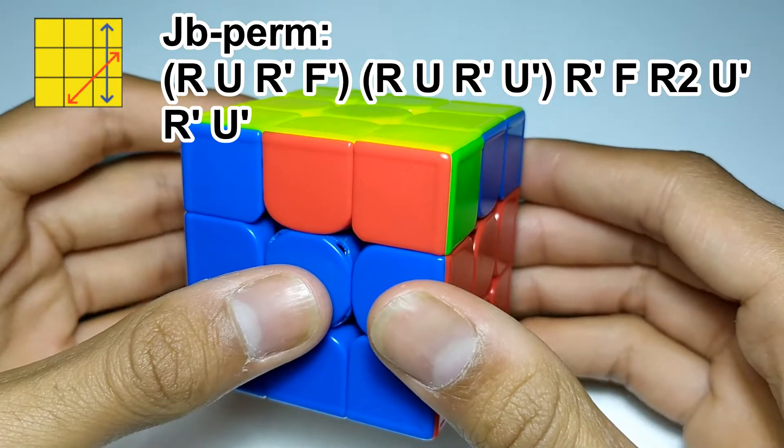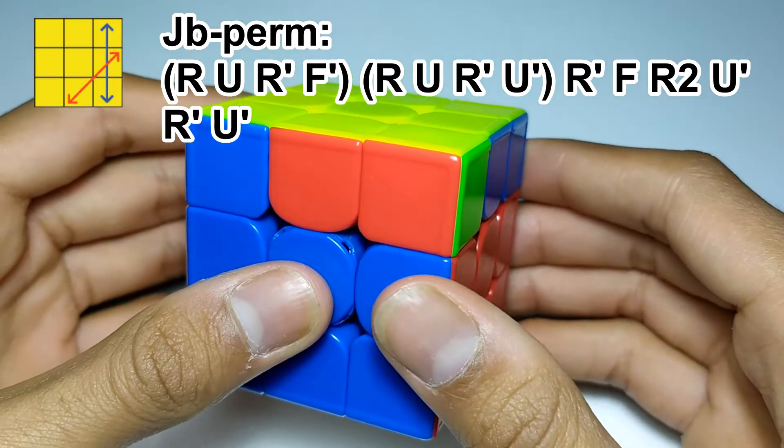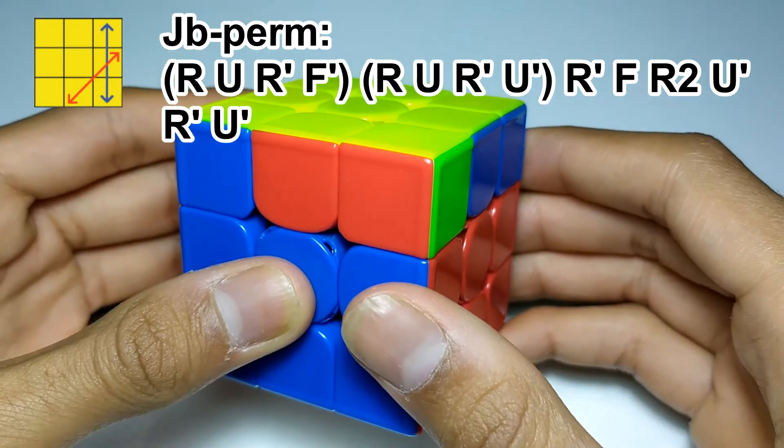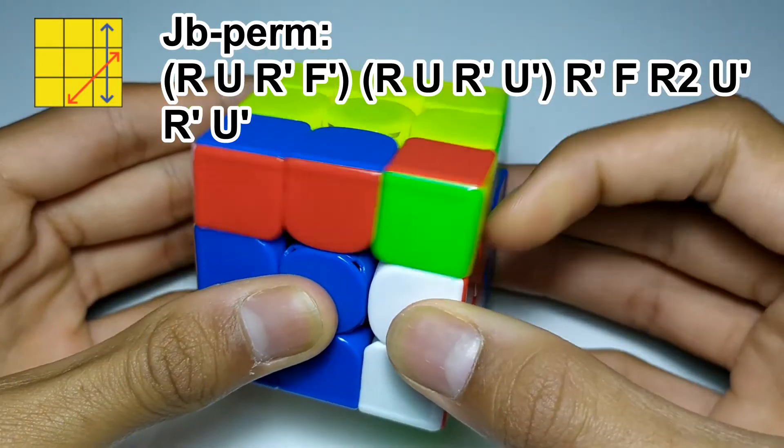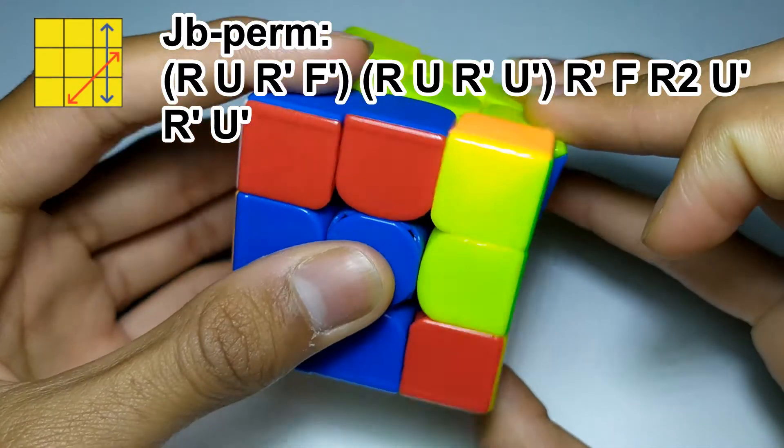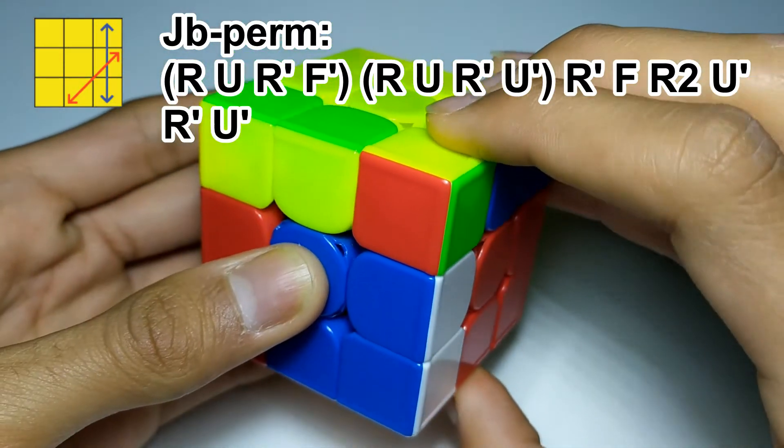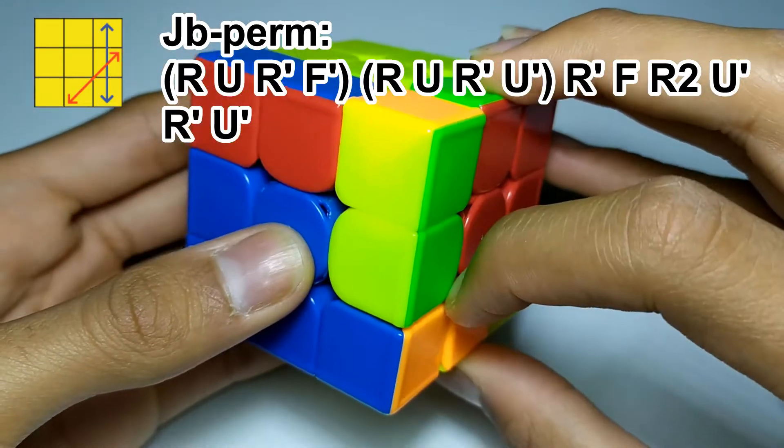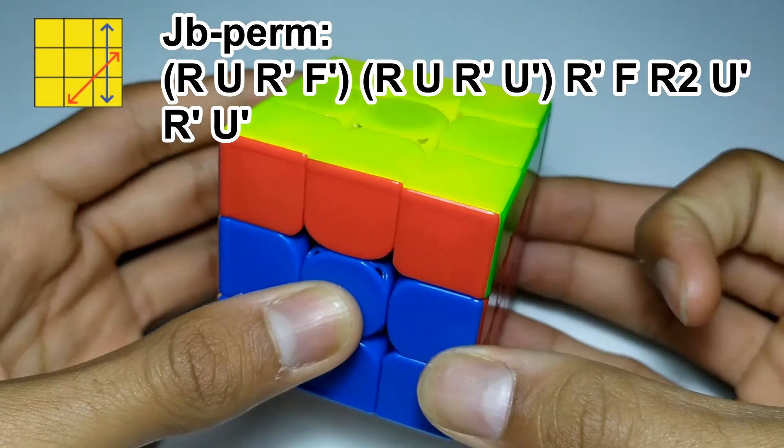So, just like the T-perm, there are two ways of finger-tricking this. One of them, the easier way of doing it, is by starting with a re-grip, then doing R, U, R', and then F' with your left hand, and then R, U, R', U', R', F, R2, U', R', U'.